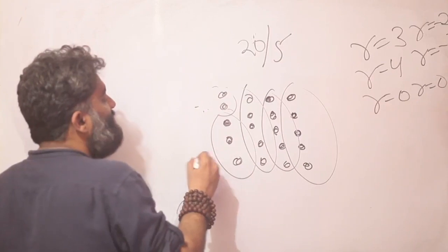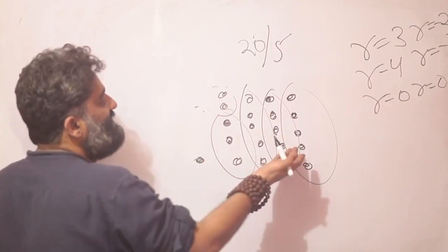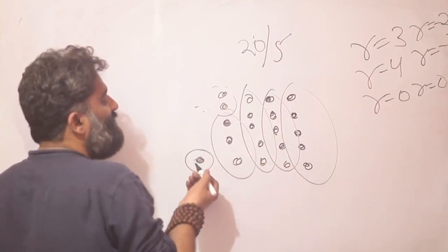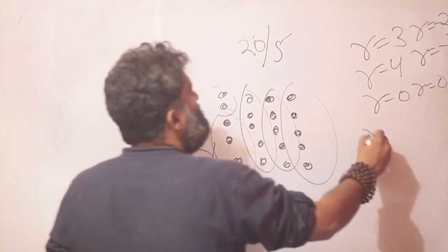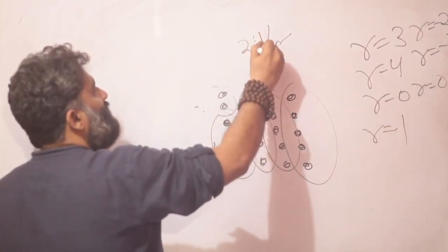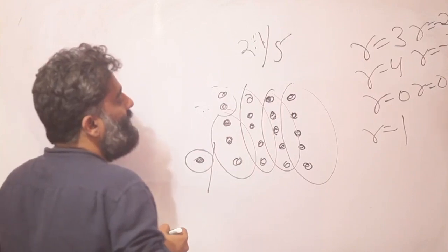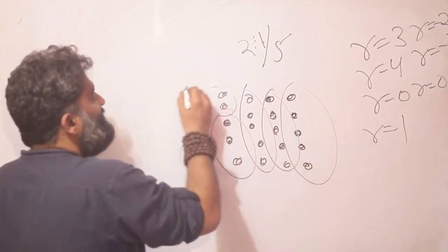I go for 21 toffees. I can see I have 4 packets. This one toffee will be left out. So my remainder would be 1. I am thinking of 21 divided by 5, then my remainder is 1.